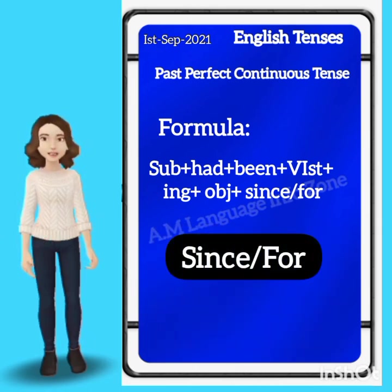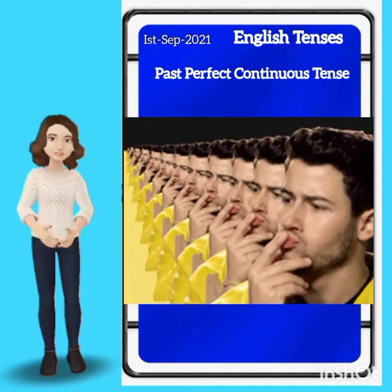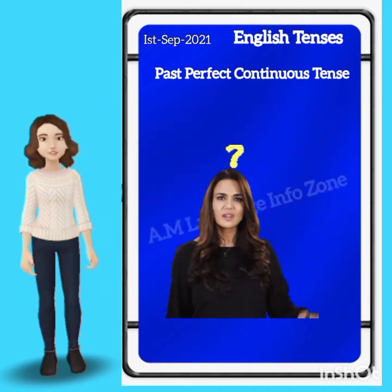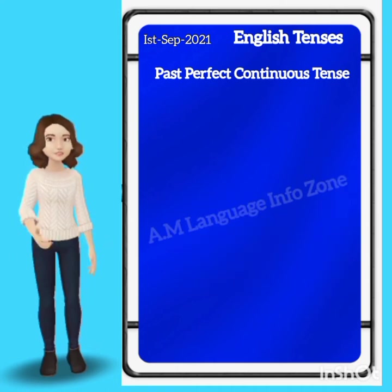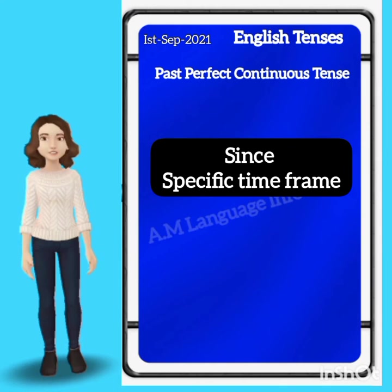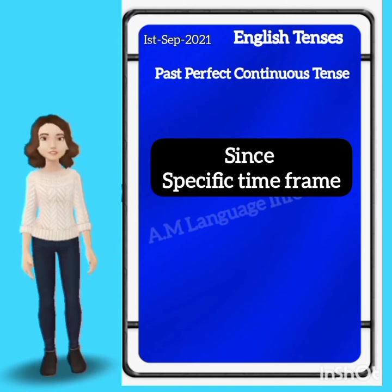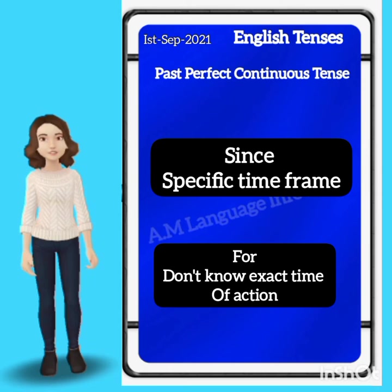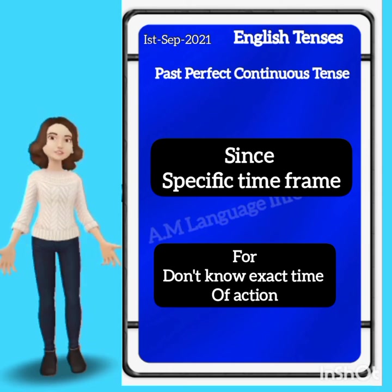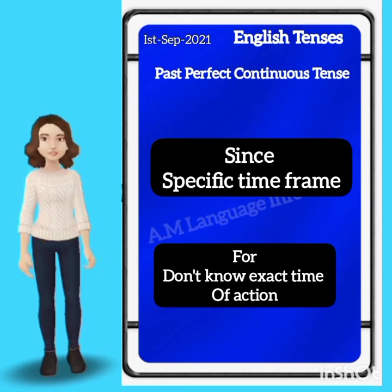With 'since,' there is a limited or specific time frame. For example: 'He had been going to school since last week.' With 'for,' we express a duration — for example: 'She had been reading for one year.' So 'since' marks a specific starting point, while 'for' marks a duration.